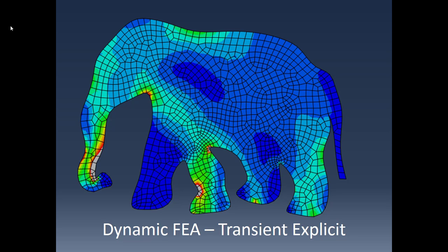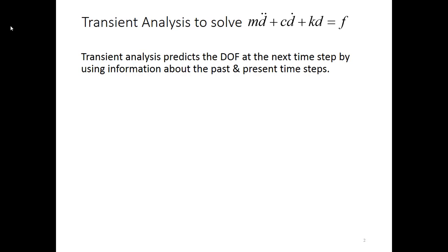This is the second video on dynamic FEA looking at the transient or time-dependent case. This one focuses on the explicit analysis type. I'll start out with a quick reminder.